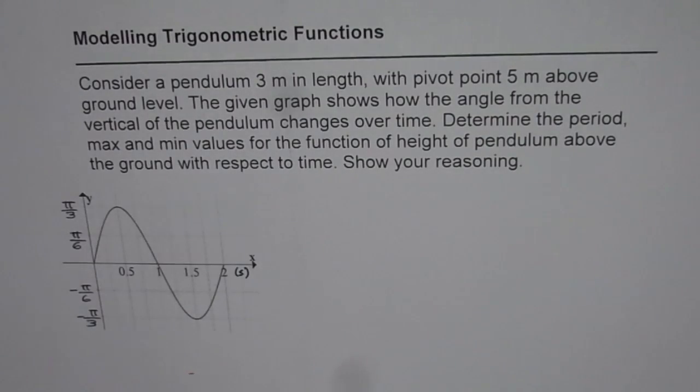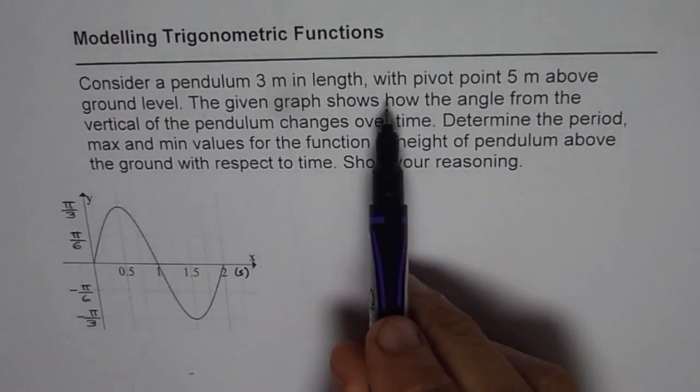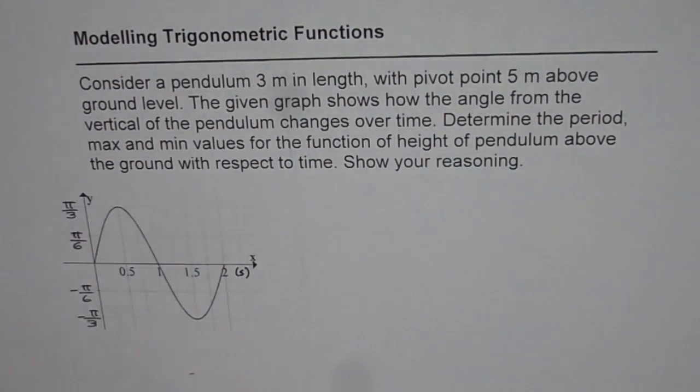The question before us is: consider a pendulum three meters in length with pivot point five meters above ground level. The given graph shows how the angle from the vertical of the pendulum changes over time. Determine the period, maximum and minimum values for the function of height of the pendulum above the ground with respect to time. Show your calculations or show your reasoning.